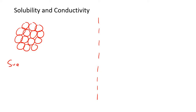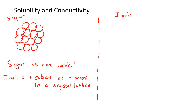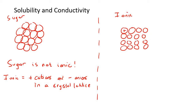Now, sugar - this is most important - sugar is not ionic. In the previous lesson we spoke about what ionic is. Ionic is when you have positive cations and negative anions in a crystal lattice. We're actually going to draw something ionic over here. So let's say that this is sugar, and an ionic substance would have a crystal lattice. The difference between sugar and an ionic substance is that the ionic one has ions - so positives and negatives.